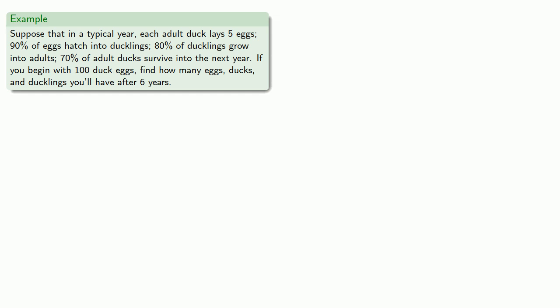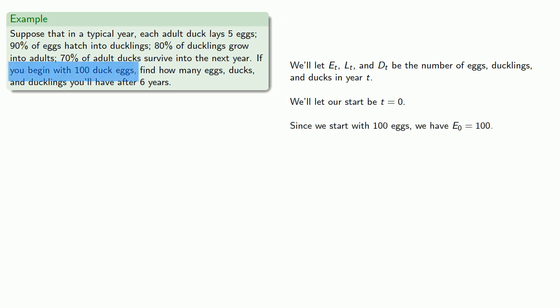And so we'll want a way of recording the information we've found. So we'll let E_t, L_t, and D_t be the number of eggs, ducklings, and ducks in year t, where whatever year we're in we'll subscript that after the letter. We'll let our start be t equals zero. And since we start with 100 eggs, we have E_0 equal to 100.